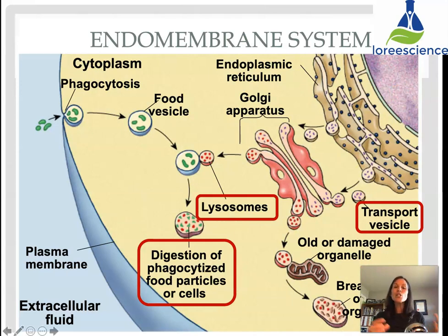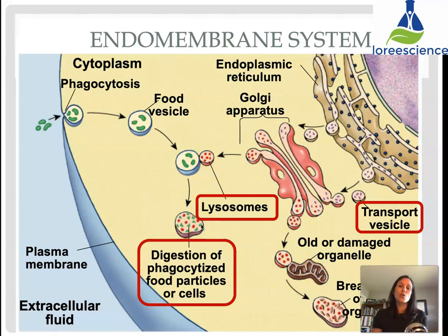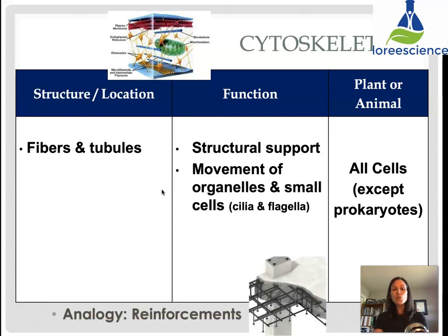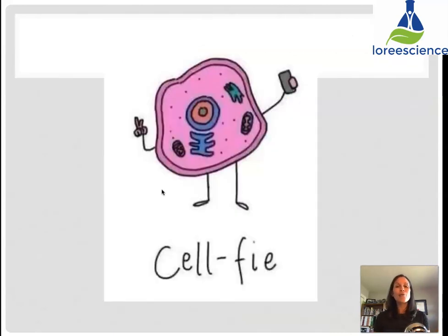Looking at the endomembrane system — the inside membrane system — we have the endoplasmic reticulum, the Golgi bodies, lysosomes, and organelles like mitochondria. All of these membranes interact with each other, so we call it an endomembrane system because all those membranes interact to allow the cell to function. Cytoskeletons are made of fibers and tubules. Their job is structure, support, and to move things around. Cytoskeletons are found in all cells except prokaryotes. An analogy would be like reinforcement beams. That is it for cell organelles.